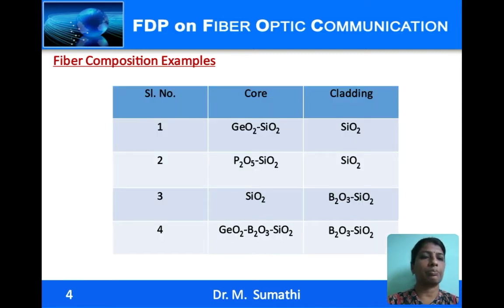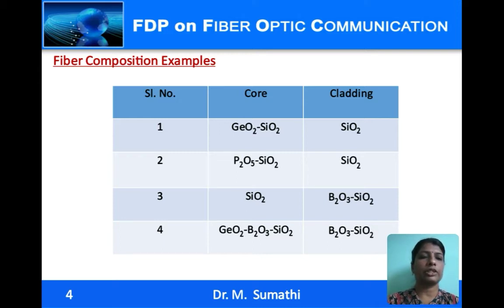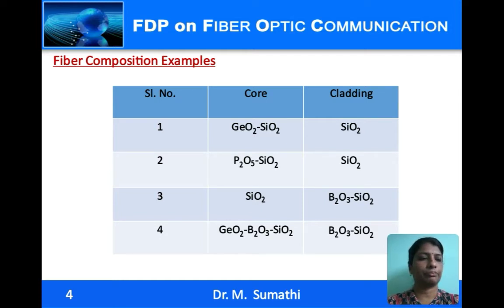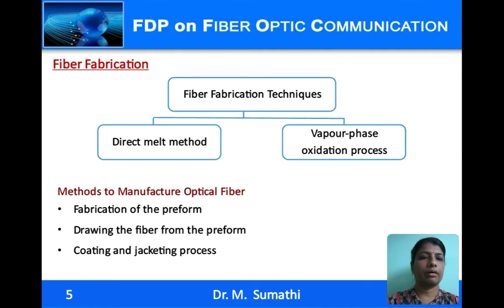This table gives the popular combinations that are used. If the cladding is pure silica, then the core should have a higher refractive index, so germanium dioxide or phosphorus pentoxide is used as the dopant. When silica is used for the core, the cladding should have a lesser refractive index, and boron trioxide is used. These are the common combinations used for fiber manufacture.